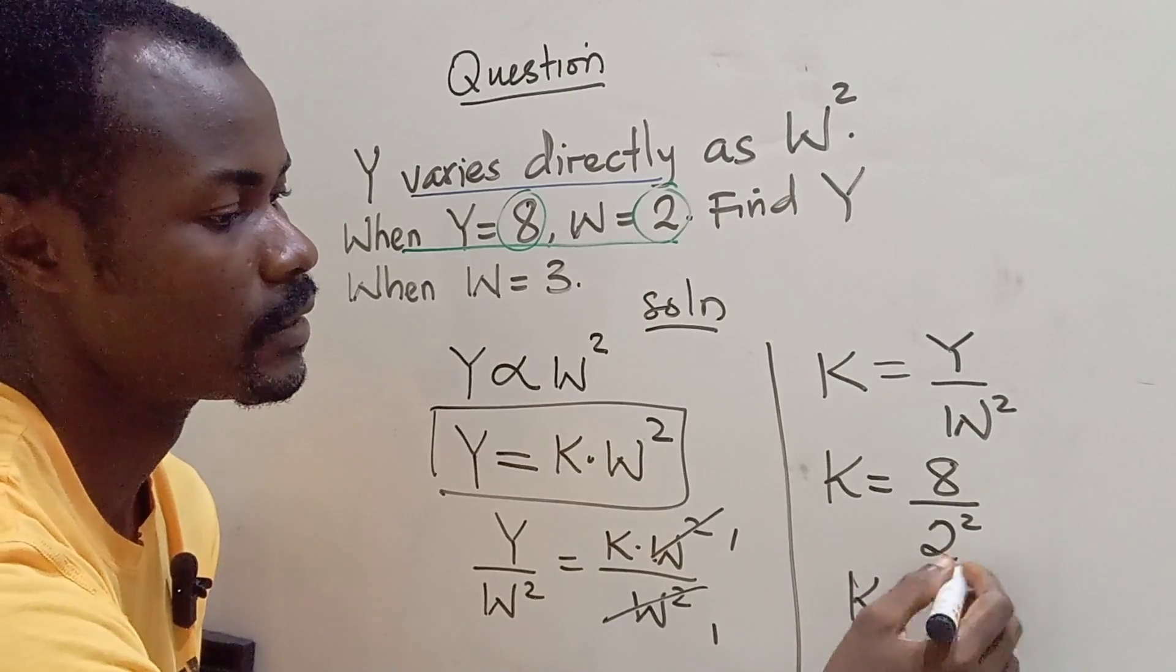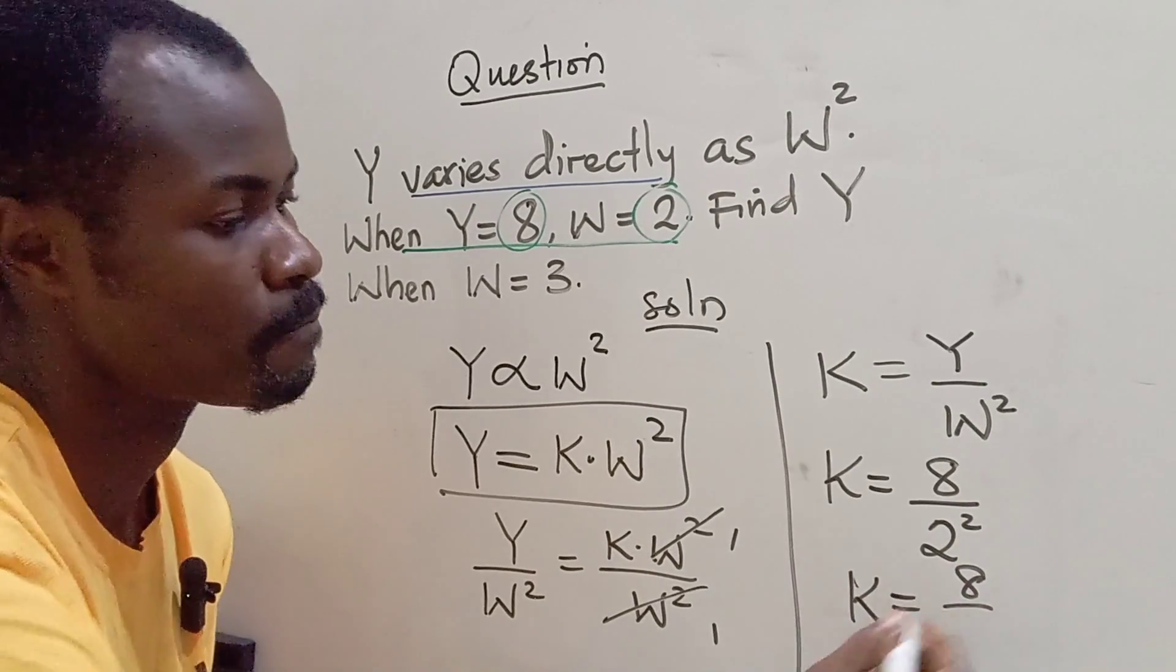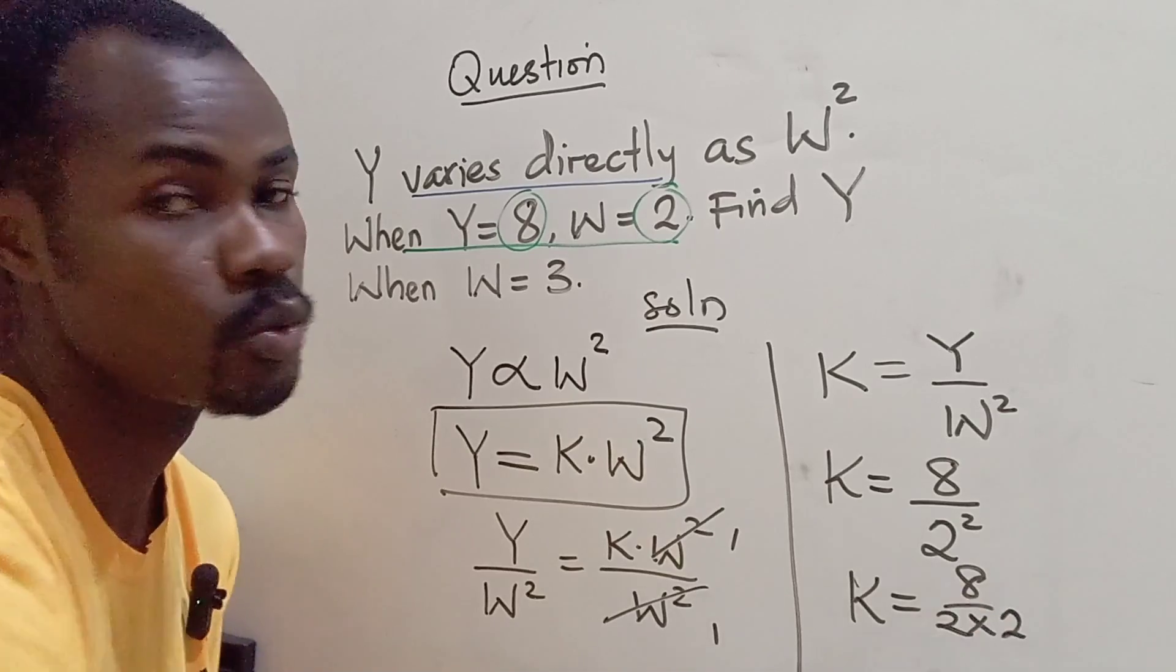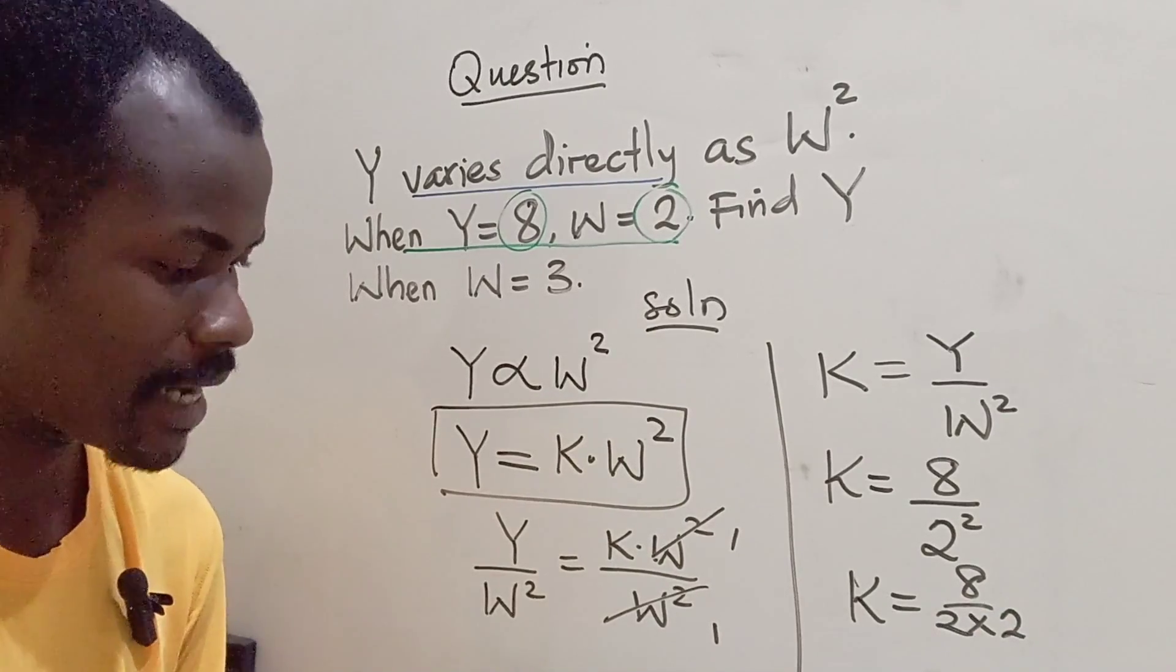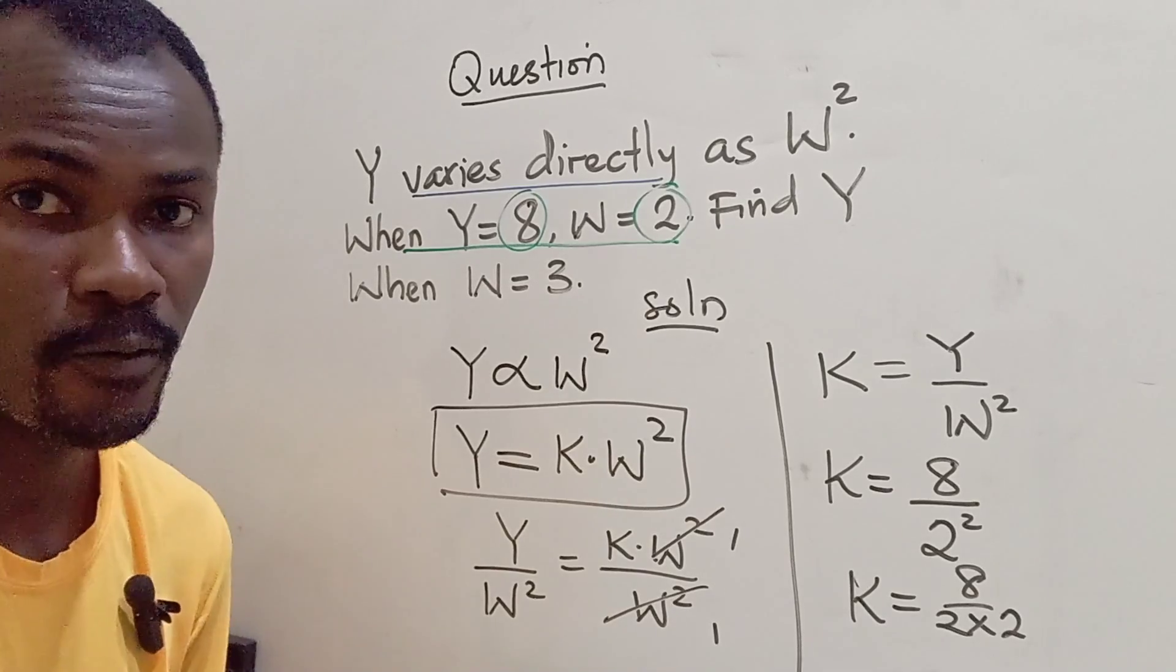So that will give us K equals 8 divided by, so we have 2 times 2. And we all know that 2 times 2 is 4, right?